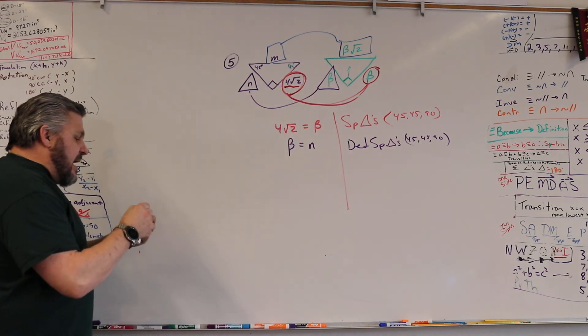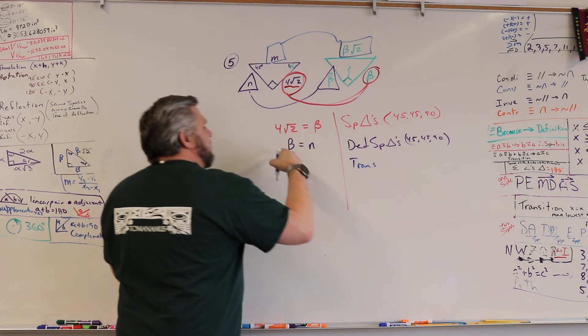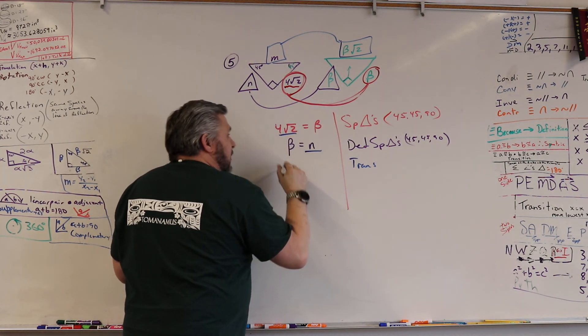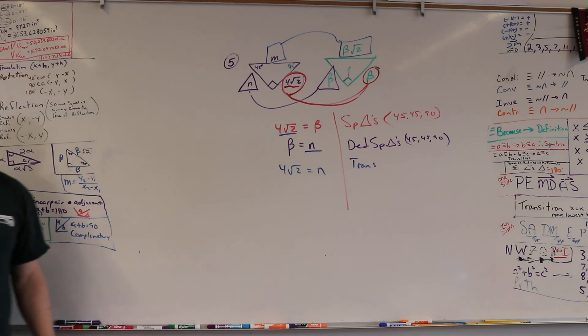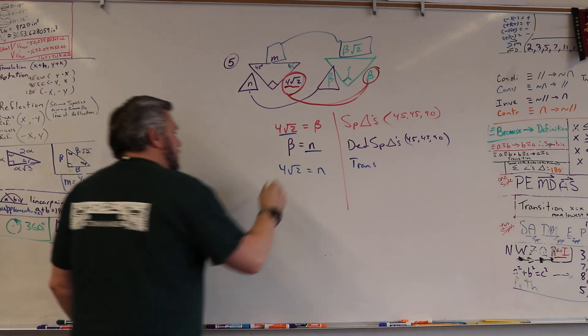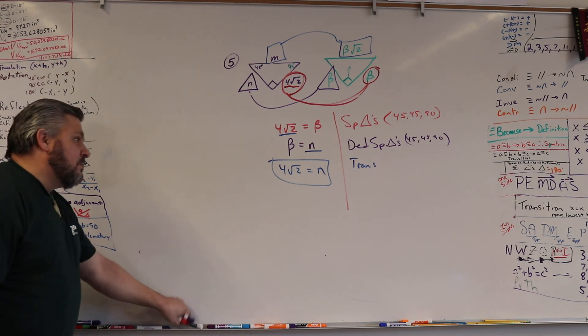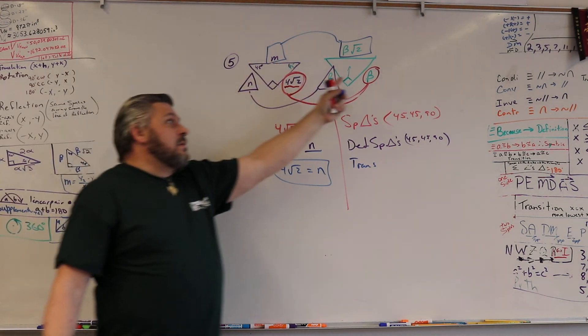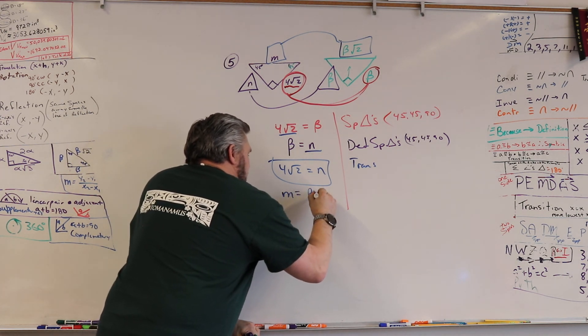So you're going to use special triangles three times, one for every side. All right. So now I can figure out what N is by using my transitive property. Transitive property tells me that if A equals B and B equals C, then A equals C. That's the transitive property. And that's done. I know what N is. I got one answer. Now I got to find M. Right? So how do I find M? What does M equal? M equals beta square root two. That's right.